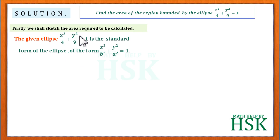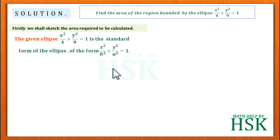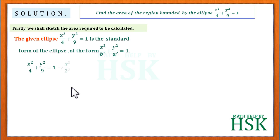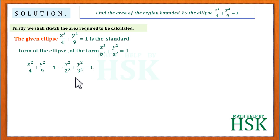The given curve is the standard form of the ellipse x²/b² + y²/a² = 1. We can convert this into standard form as x²/2² + y²/3² = 1.